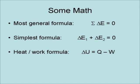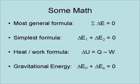In dealing with heat and work, the formula is the change in internal energy equals the heat added to the system minus the work done by the system. In a gravitational field, it is the change in potential energy plus the change in kinetic energy equals zero.